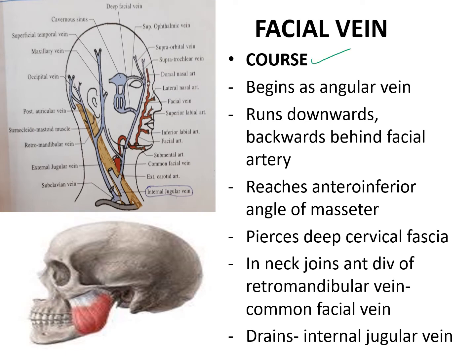Now we will see about the course of the facial vein. After forming the angular vein at the medial angle of the eye, the facial vein runs downwards and backwards behind the facial artery. It reaches the antero-inferior angle of the masseter. The muscle visible here is the masseter — this is its anterior border and inferior aspect, so this is the antero-inferior angle of the masseter.